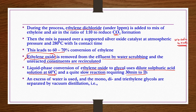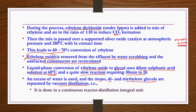An excess of water is used and mono, di, and triethylene glycols are separated by vacuum distillation in a continuous reactor-distillation integrated system. The reaction itself is very simple, so no separate detailed flowchart is needed for this step.